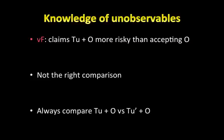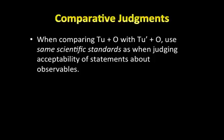Instead, the comparisons we actually make in scientific practice are about comparing, on the one hand, a theory of unobservables in conjunction with a collection of statements about observables, with, on the other hand, a different theory of unobservables (T-U prime) in conjunction with the same collection of statements about observables. Overall, when we compare scientific theories in this way, we use exactly the same scientific standards as when we judge the acceptability of statements about observables.